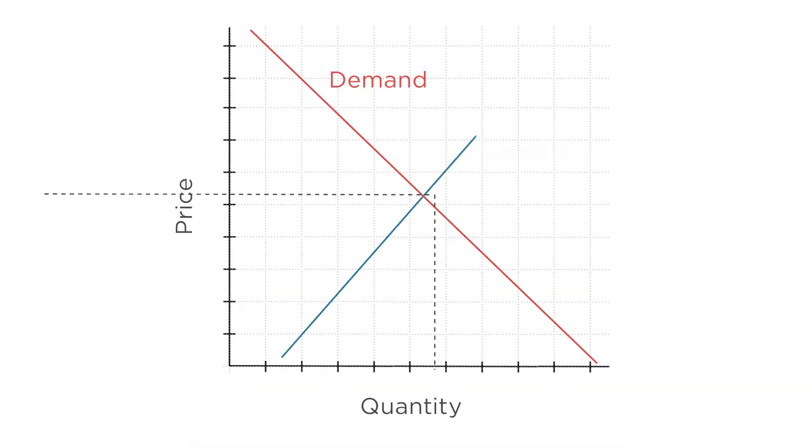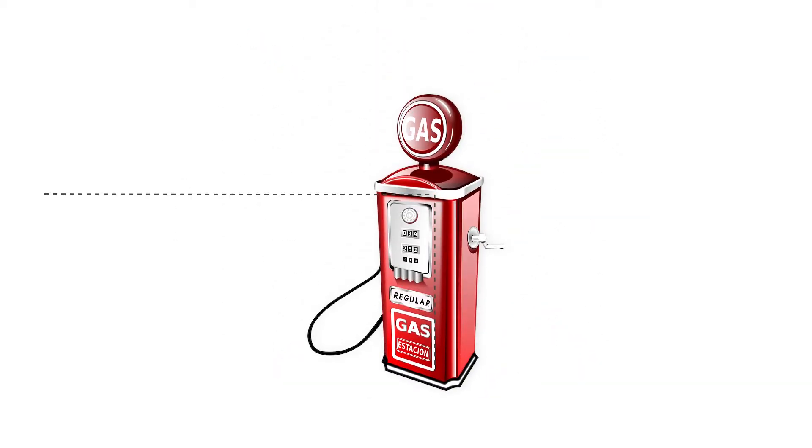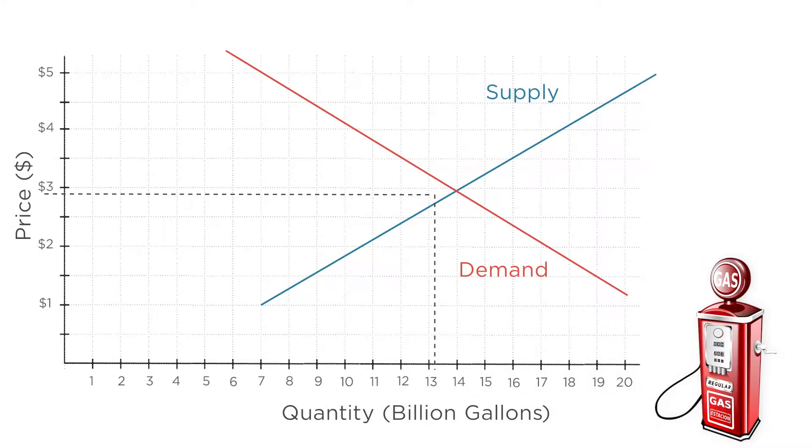So we have a demand curve and a supply curve. And where the two intersect is the market equilibrium, where both consumers and producers are satisfied with the market outcome. Let's see how this works in an important real-world market, the market for gasoline. This graph shows an example of supply and demand curves in the market for gas in the U.S., with downward sloping demand and upward sloping supply. Suppose that this market is in equilibrium at a price of $3 per gallon, with 14 billion gallons sold per month. What could happen to change this equilibrium? What could happen to make consumers or producers not happy with this outcome?